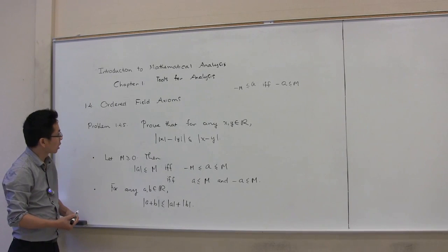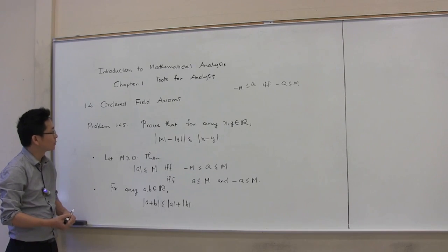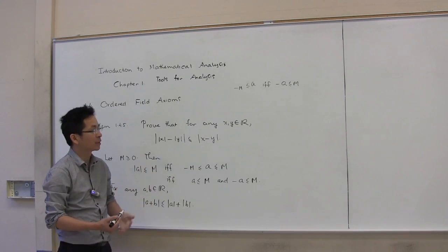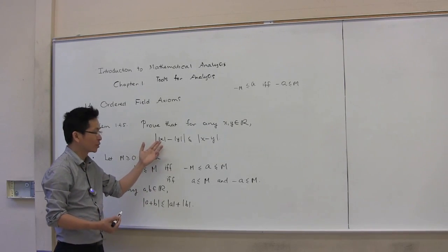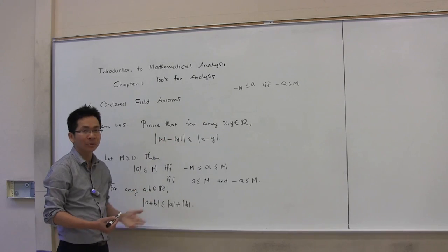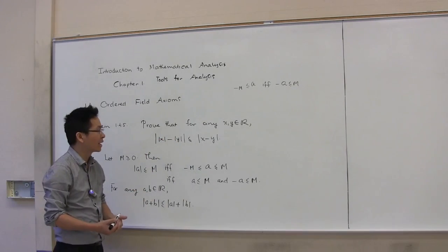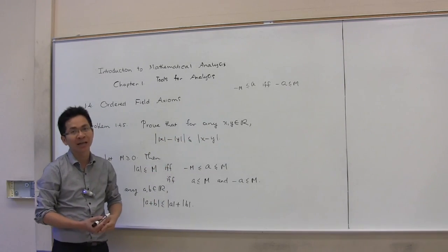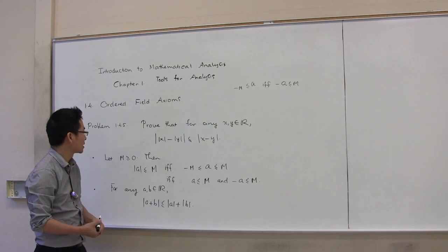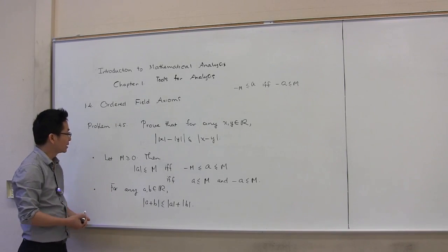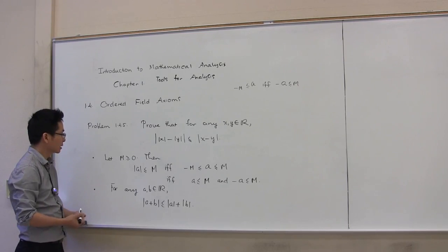In this video, we're going to work on problem 1.4.5 from the textbook: prove that for any real numbers x and y, the absolute value of (|x| - |y|) is less than or equal to the absolute value of (x - y). Before solving the problem, let me introduce some important results.